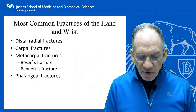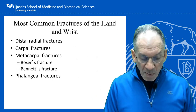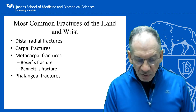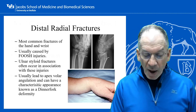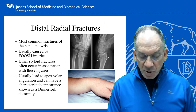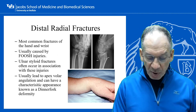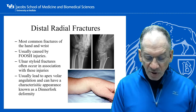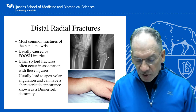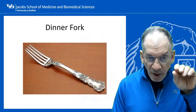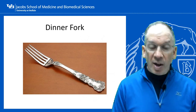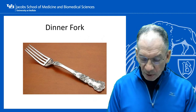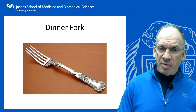Most common fractures of the hand and wrist: distal radius fractures, carpal fractures, metacarpal fractures, and phalangeal fractures. Distal radius fractures are also commonly caused by a FOOSH injury and often have an associated ulnar styloid fracture. The classical deformity is known as a dinner fork deformity because the profile of the wrist resembles the shape of a dinner fork.